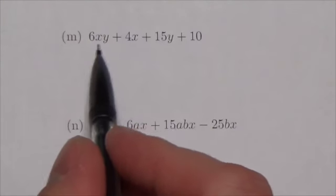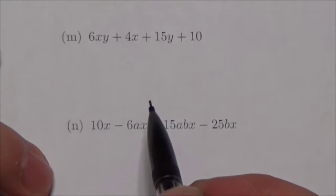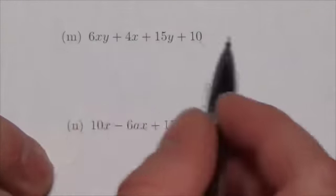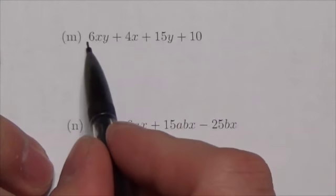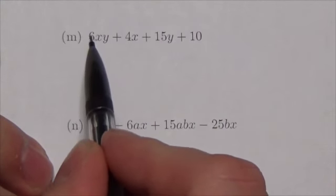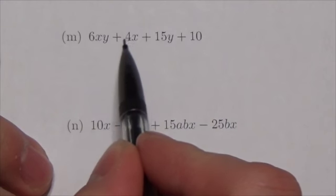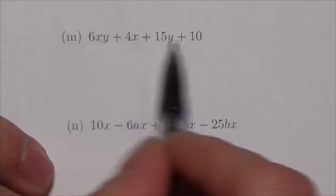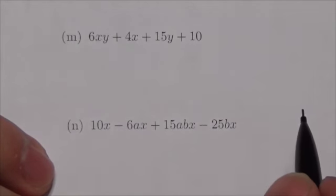Now the first thing I notice when I see this is I've got four terms. When you've got four terms, and if there's nothing common to all four terms, we should look for that real quick. So with six I see a factor of three and a two. With four there's the two, but with fifteen there's just three and five. So there are no common factors to all terms here.